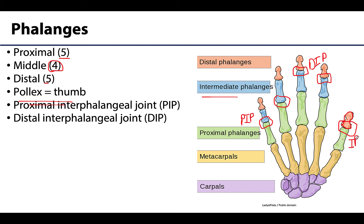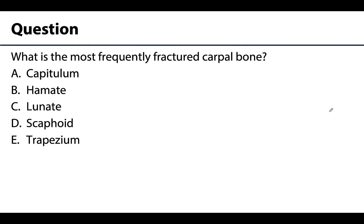That covered a lot of bones quickly for the wrist and hand. While there aren't as many large muscle attachment points as in other upper limb bones, we can group these into big-picture concepts. Now a question: which is the most frequently fractured carpal bone? Is it the capitulum, the hamate, the lunate, the scaphoid, or the trapezium? Pause and go back to your notes if needed.